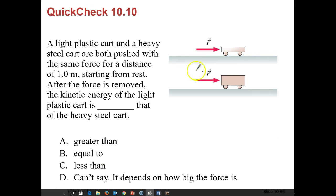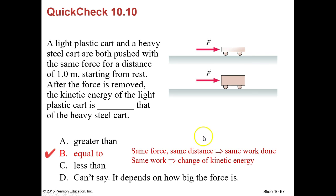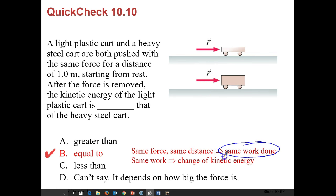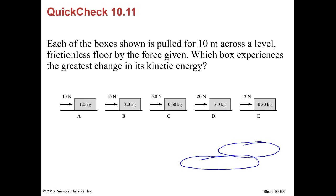Quick check: a light plastic cart and a steel cart are both pushed with the same force for a distance of one meter, starting from rest. After the force is removed, the kinetic energy of the light plastic cart compared to the steel cart is equal. It's equal because the same force over the same distance means the same amount of work done, so the same change in kinetic energy — though the lighter cart will be moving much faster.